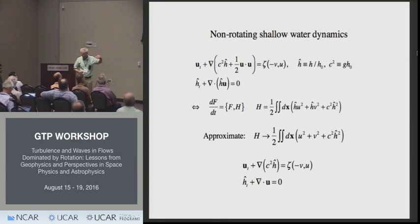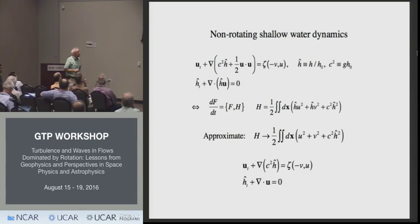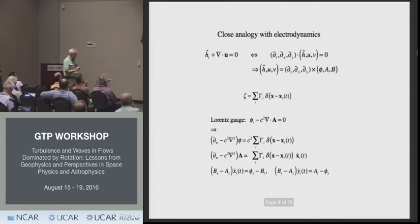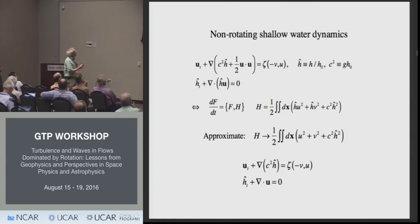The question is where did I get the full Lagrangian in the first place, because it's completely new and not related in any simple way to previously published variational principles for fluid mechanics. To explain that, I go all the way back to the shallow water equations, which was the actual starting point for all this. At the top are the familiar form of the shallow water equations, where h-hat is h scaled by the mean depth.